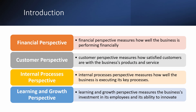When talking about the Balanced Scorecard, it covers four perspectives. If you're introducing anything in the organization, it should cover these four perspectives. First is the financial perspective, which measures how well the business is performing financially. Second is the customer perspective, which talks about metrics to measure how satisfied customers are. Third is the internal process perspective, which talks about how well the business is executing its key processes. And fourth is learning and growth, which measures the business's investment in its employees and its ability to innovate.